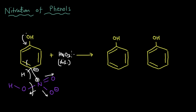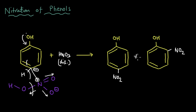This reaction is different because we're using dilute HNO3, so we get different products — two of them. We get paranitrophenol, which is what we wanted, but we also get orthonitrophenol. So we get two products: one is paranitrophenol and the other is orthonitrophenol.